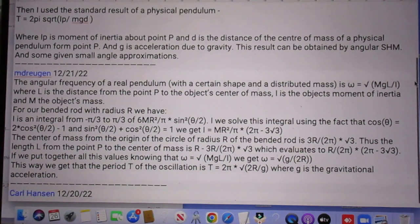Now the solution by M. I don't know whether I pronounced that correctly. He is the only guy who found a slip I made in my solution of a very complicated problem. In my solution I even said that there may be a slip somewhere, a slip of the pen. He found the slip of the pen. So here is his solution which came in the same day. The angular frequency of a real pendulum with a certain shape and a distributed mass is omega equals the square root of MgL divided by I, where L is the distance from the point P to the object center of mass. I is the object moment of inertia and M is the object mass.